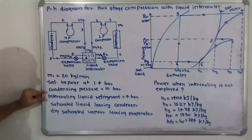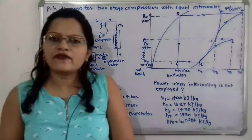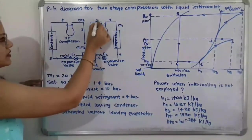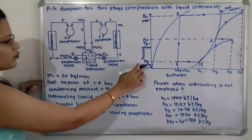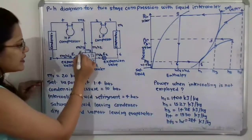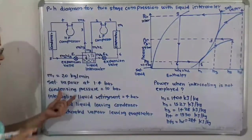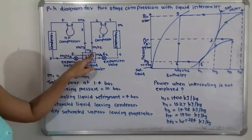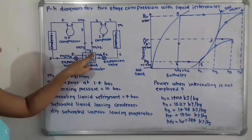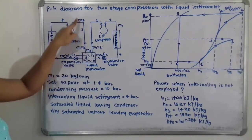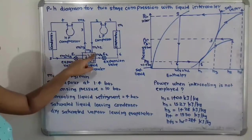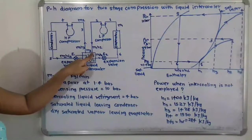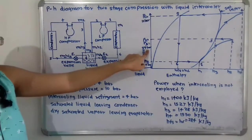The intercooling liquid refrigerant is at 4 bar pressure. After the low pressure compressor, the refrigerant is at 1.4 bar, but when it enters the liquid intercooler, the pressure is 4 bar. At point 2, the pressure is 4 bar, and at point 3 leaving the liquid intercooler, the pressure also remains 4 bar. So p2 equals p3 equals 4 bar, and we select this horizontal line on the chart.